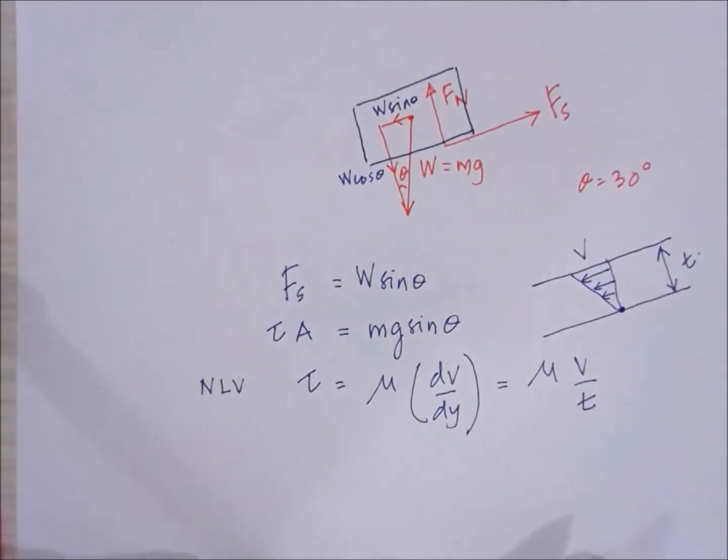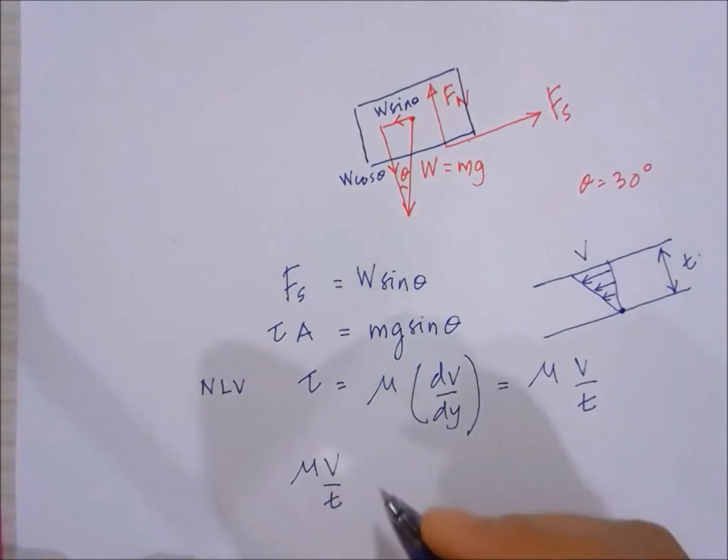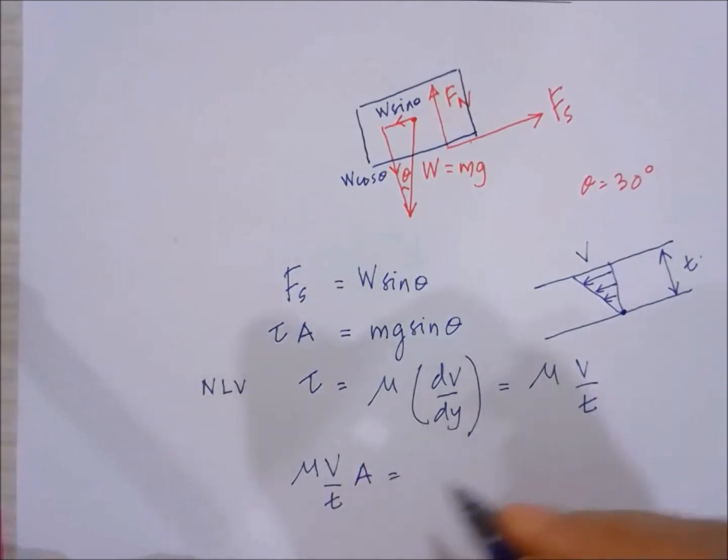So now we can substitute this into the equations. So we have now tau. So mu v over t multiplied by area must be equal to mg sin theta.